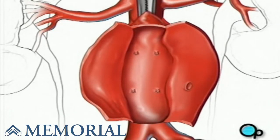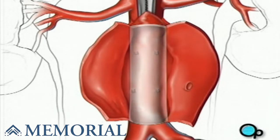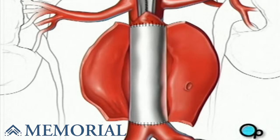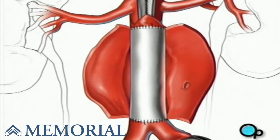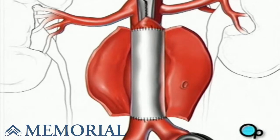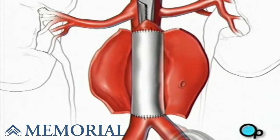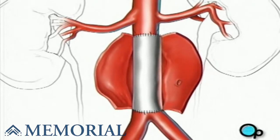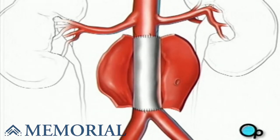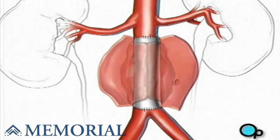A tube made of a sterile synthetic material can now be inserted into the blood vessel to provide support and reinforcement. It is then sewn into place. One by one, your doctor will remove the clamps, restoring blood flow to the legs. After verifying there are no leaks around the surgical field, the team will finally close the vessel with sutures.